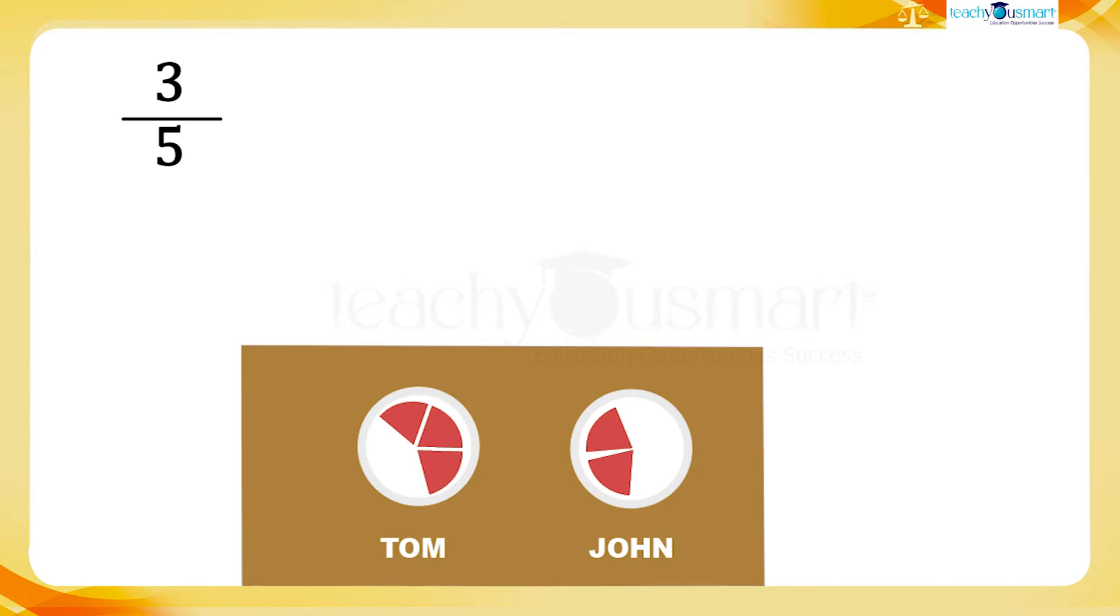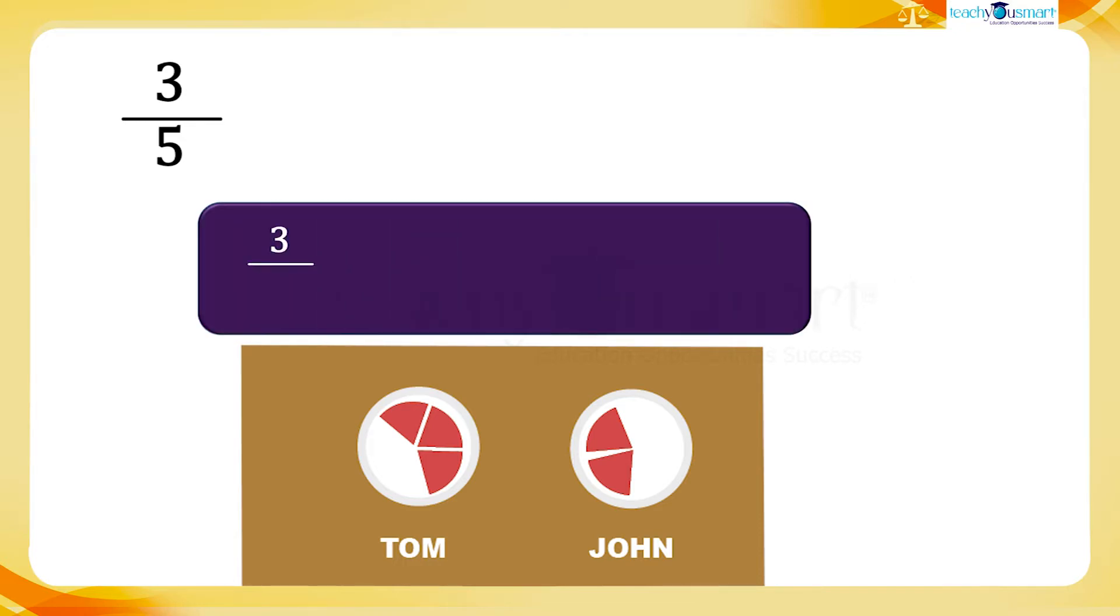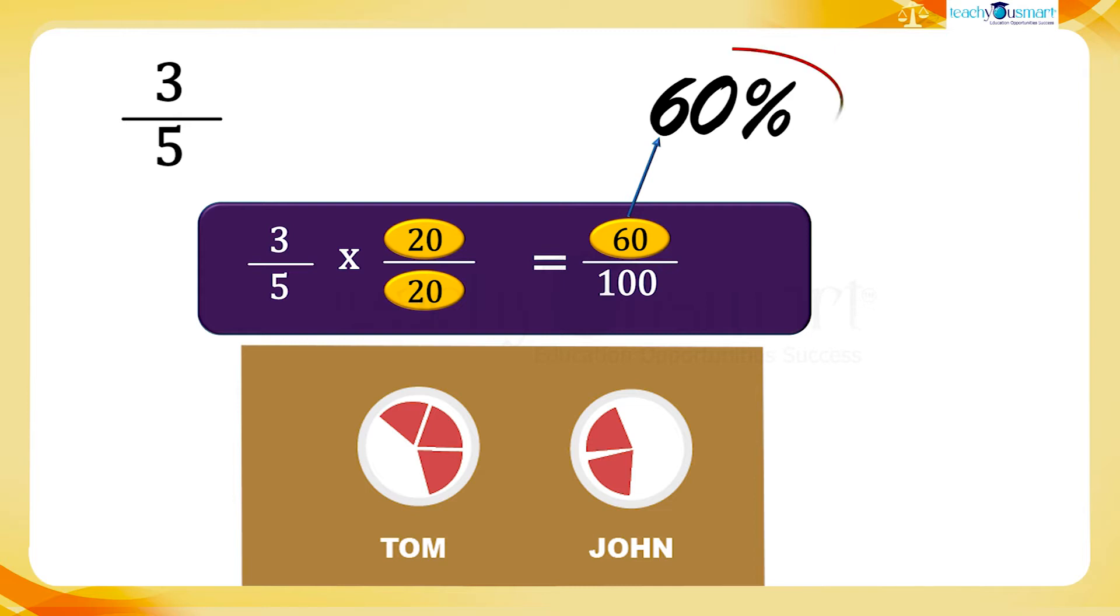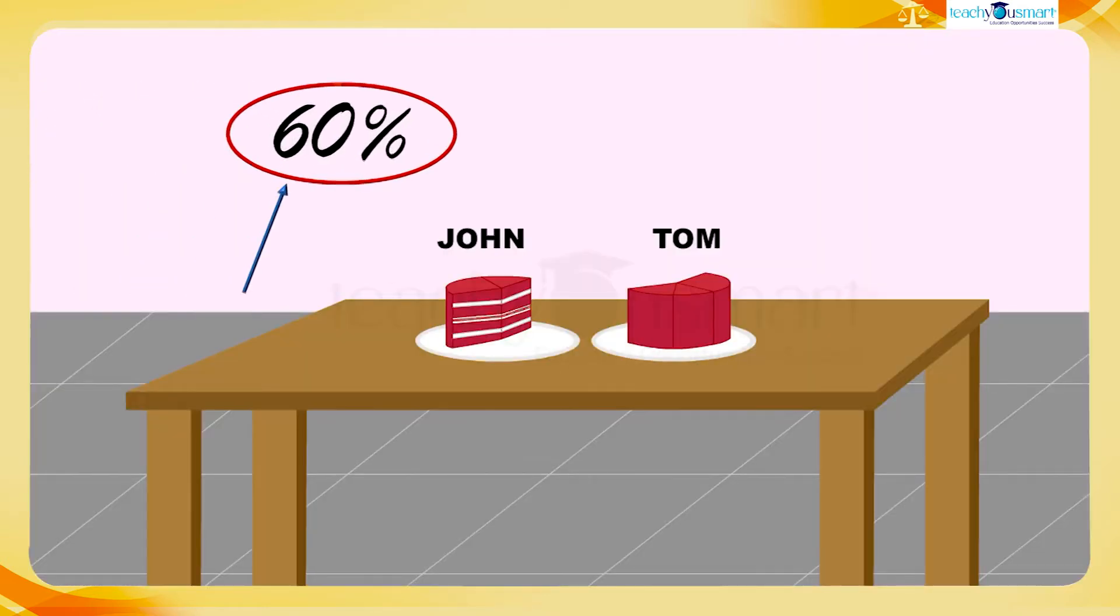For that, find the value in percent or per 100, so we have to change the denominator as 100. For that we have to multiply the numerator and denominator by 20, because 100 divided by 5 is 20. When we multiply by 20 over 20, we get 60 over 100, which equals 60 percent. Tom has 60 percent of the cake.